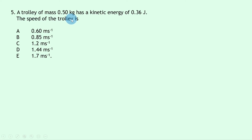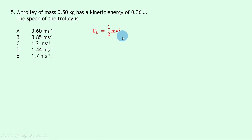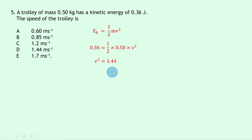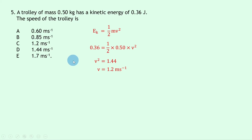Question 5: a trolley of mass 0.5 kg has kinetic energy of 0.36 joules. Using Ek = ½mv², substituting gives 0.36 = ½ × 0.5 × v², which simplifies to v² = 1.44. Taking the square root gives v = 1.2 m/s. The answer is C.